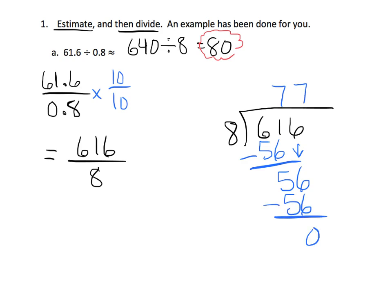So, the answer is 77. The actual answer is 77. Our estimation was 80. That's pretty darn close. So, that tells us we're at least reasonable. Our answer is a reasonable answer. And, of course, it's correct.